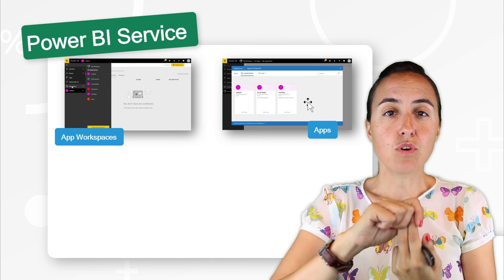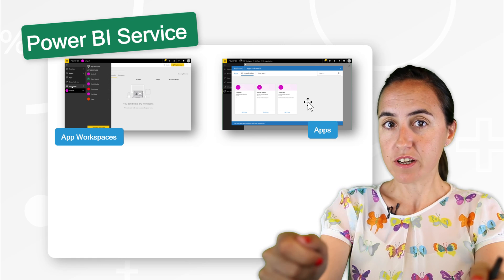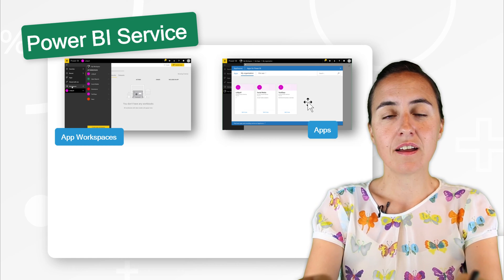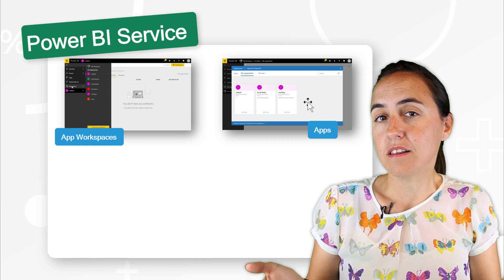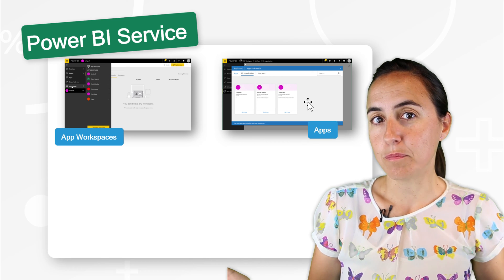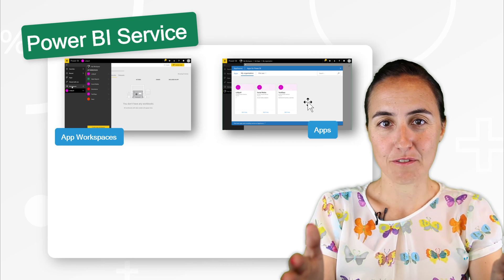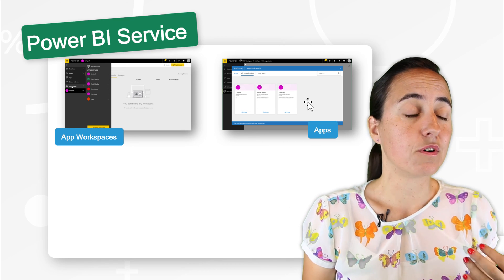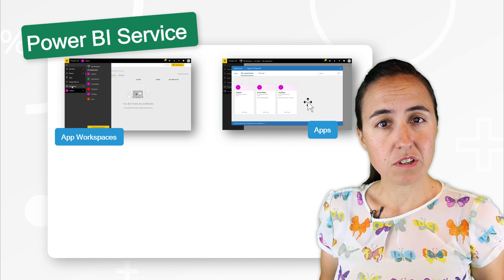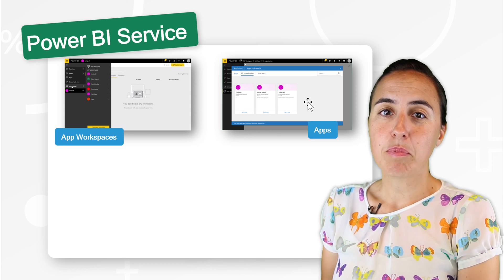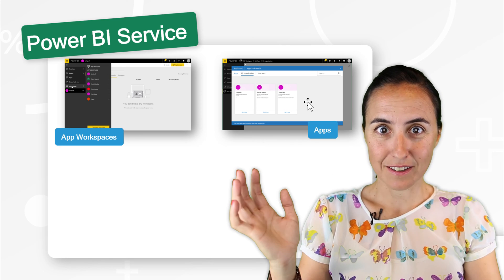There are two options for apps. You can publish an app and push it to your users, or you can have your users download the app. If you have a standard report for your marketing team, push it to everybody so they have it in front of them. But for ad hoc reports — for a project, an analysis, budgeting, or something like that — it is better that users download it themselves if they need it, so their workspace doesn't get too crowded.